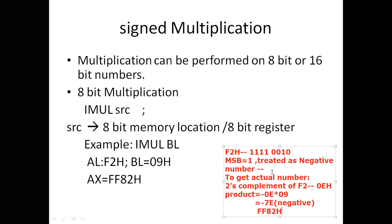To verify: since FFA2h has MSB=1, it is a negative number in two's complement. To get the actual value we find the two's complement of FFA2h, which gives us 0Eh. So AX holds -0Eh × 09h = -7Eh, and the two's complement of 7Eh is FFA2h, confirming our result.